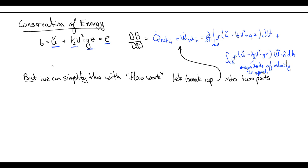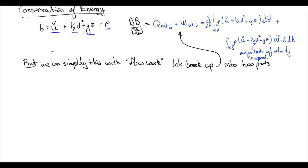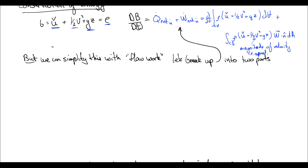This is a lot, and we can make it more useful by breaking up our work in into two parts. We're going to say that our work equals shaft work in addition to flow work. Flow work is the work that pressure does when fluid flows across the surface. So a differential amount of w_dot_p, the pressure work, is equal to negative p times the differential area, times n-hat dotted into our velocity at the surface.